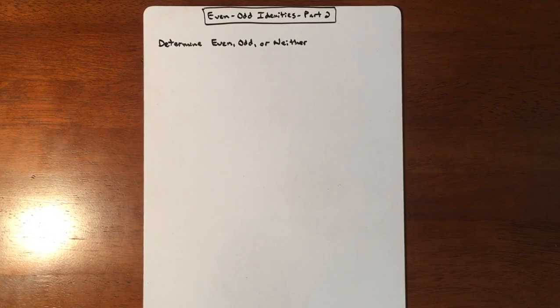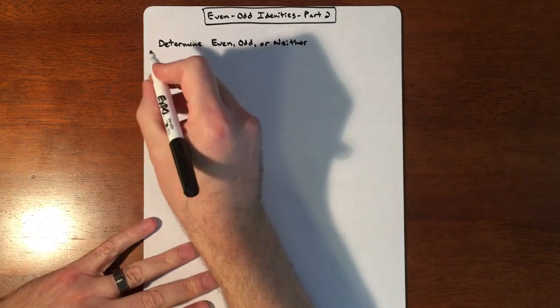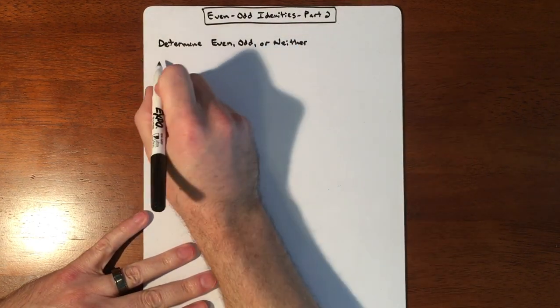In this example, we're going to be determining whether a function is even, odd, or neither. We're going to be doing a trig function. So a quick refresher on what it takes to be even and odd, and then we'll apply that on our problem.